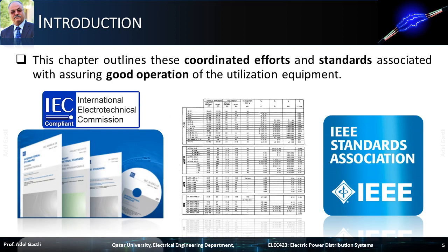This chapter outlines these coordinated efforts and standards associated with assuring good operation of the utilization equipment. In the case of non-existing national or regional adopted standards, international standards can be used. Examples of these standards are those developed and issued by the International Electrotechnical Commission and the IEEE Standards Association.